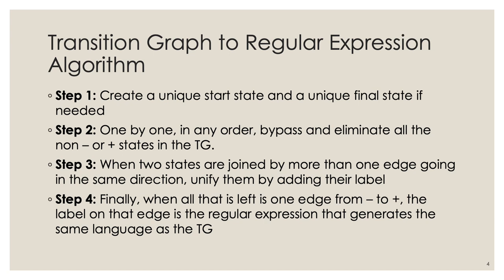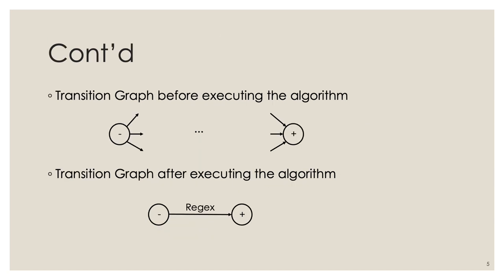Step four: when all that remains is one edge between the initial and final states, the label of that edge is the regular expression we are looking for. Before performing the bypass step, we may also need to aggregate and replace letters in the alphabet with regular expressions for simplification.